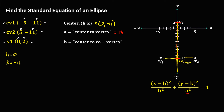To solve for b, b is the distance from center to co-vertex. Using the counting method, starting on the next point from the center toward the co-vertex, we count 1, 2, 3, 4, 5. So b is equal to 5.